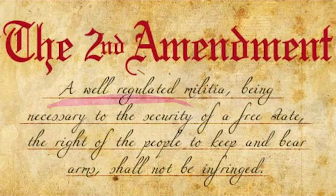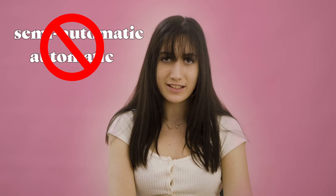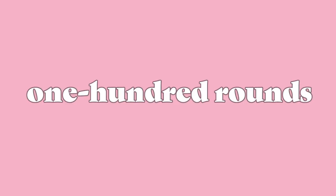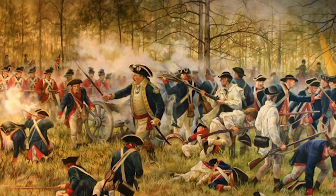The second amendment, one in the center of plenty of controversy right now, states that an individual has the right to keep and bear arms. It was created in 1791, a time when semi-automatic or automatic weapons did not exist, and the most common gun was called a musket and could hold up to one round of ammunition. In 2019, semi-automatic weapons can hold up to 100 rounds of ammunition. Not to mention, this amendment was ratified only a decade after the Revolutionary War, which was a bit different circumstances than today's day and age.